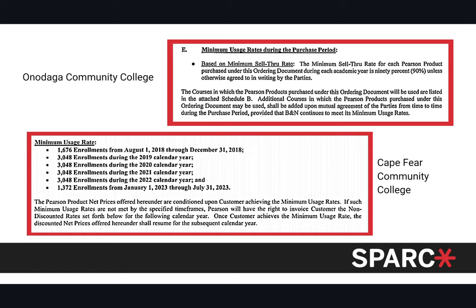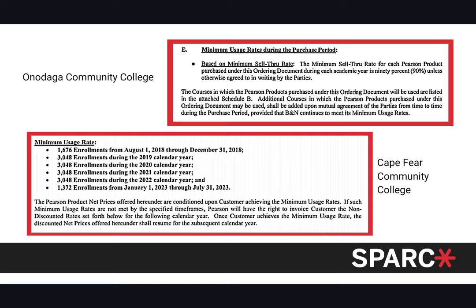At Cape Fear, the quota works a little differently — it's based on exact enrollments: 1,000 enrollments per semester, or 1,600 and 3,000 for the entire calendar year, and the institution must meet those enrollment rates.